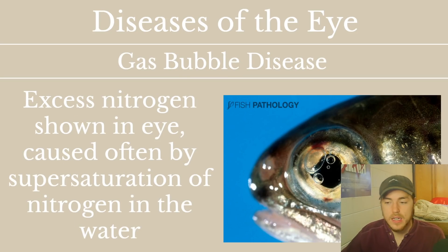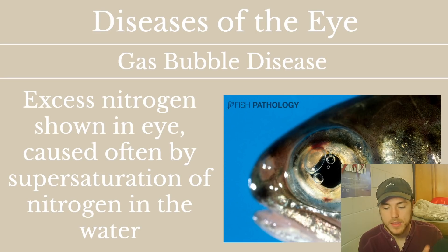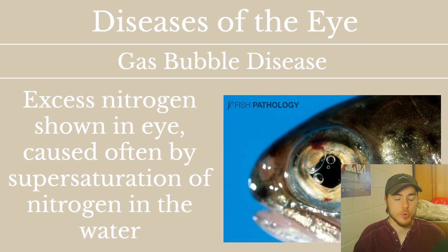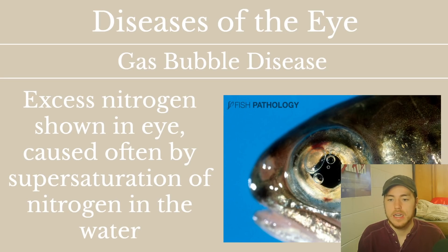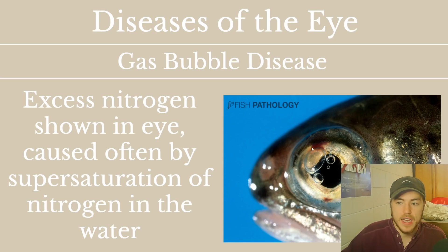Gas bubble disease is somewhat common in aquaculture systems because they pump nitrogen into the water to keep it well-balanced gas-wise. But if too much nitrogen is pumped in and there's a supersaturation — more nitrogen floating in the water than can be bound by the water — it can get into the fish's system and shows up in the eye. It looks gnarly: bubbles appear on the eye of the fish.